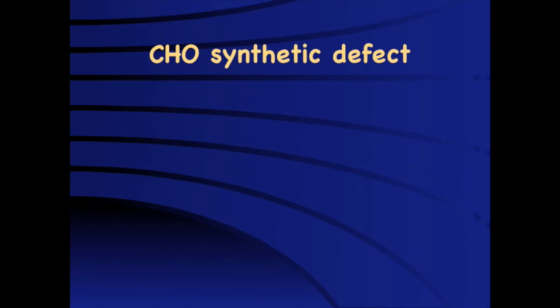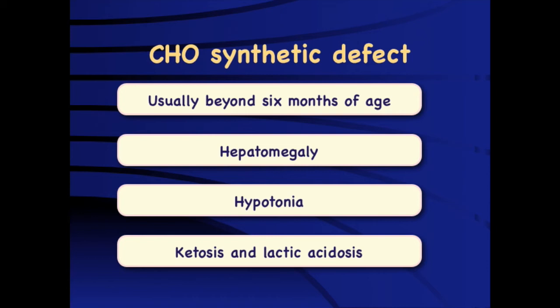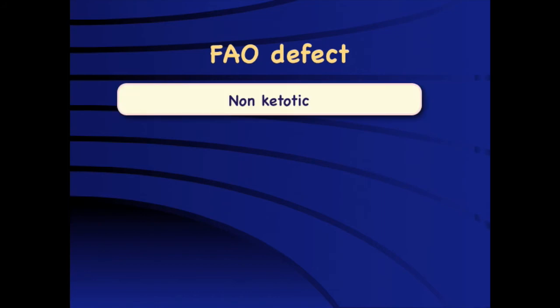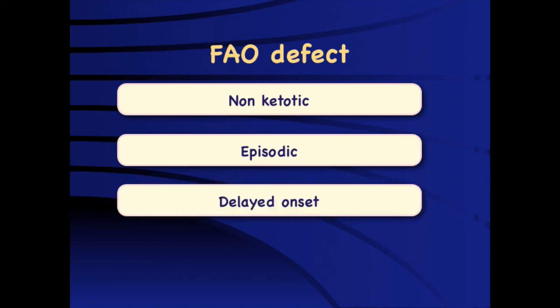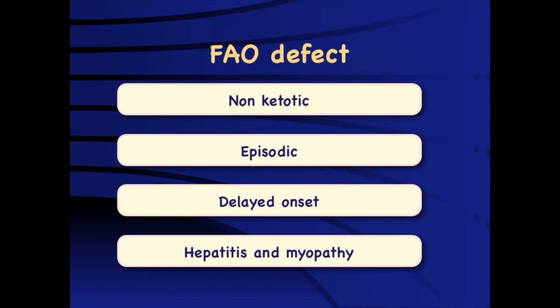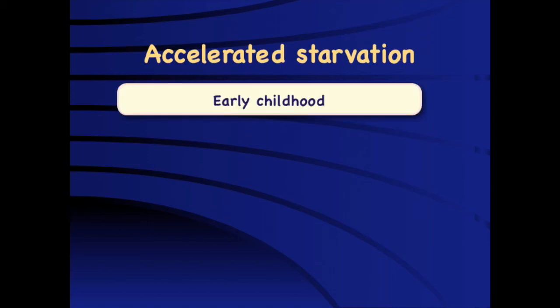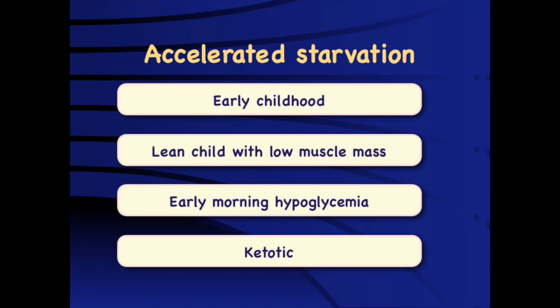Carbohydrate synthetic defects — glycogen storage diseases — typically present after around six months of life with hepatomegaly, hypotonia, and are both ketotic and acidotic due to lactic acid formation. A typical doll-like face and hypotonia should prompt diagnosis of glycogen storage disease. Fatty acid oxidation defects are rare but important causes of non-ketotic hypoglycemia, especially in an episodic setting where the child is absolutely fine and then suddenly has an intercurrent illness and becomes sick. They usually have delayed onset and associated hepatitis and myopathy. Accelerated starvation typically presents in early childhood in a lean child with low muscle mass, with early morning hypoglycemia.